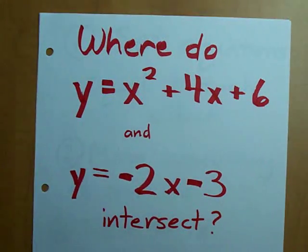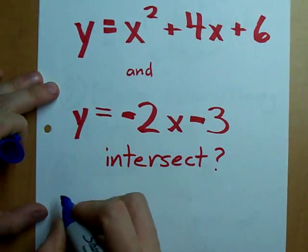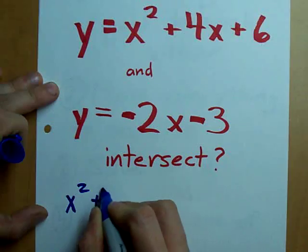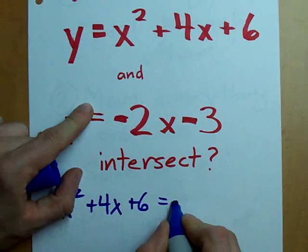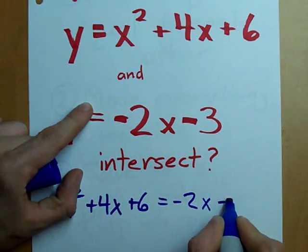Let's do it. Step 1, set equations equal to each other. So, x squared plus 4x plus 6 equals negative 2x minus 3.